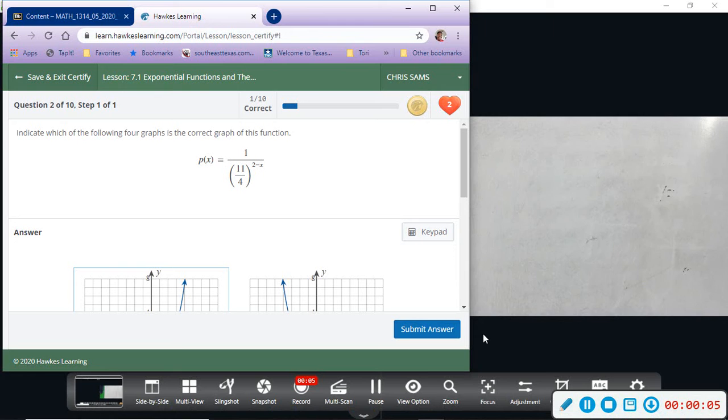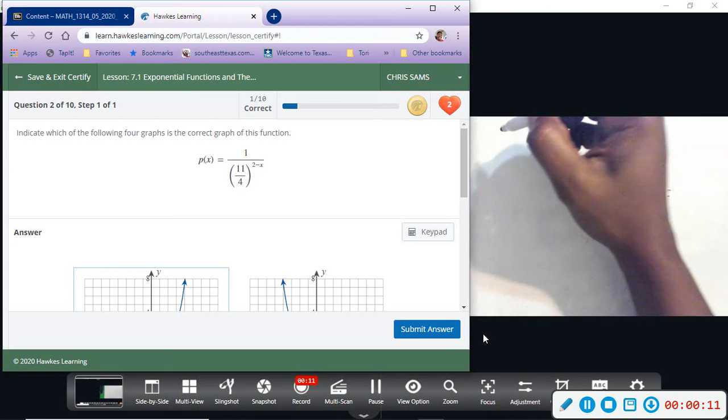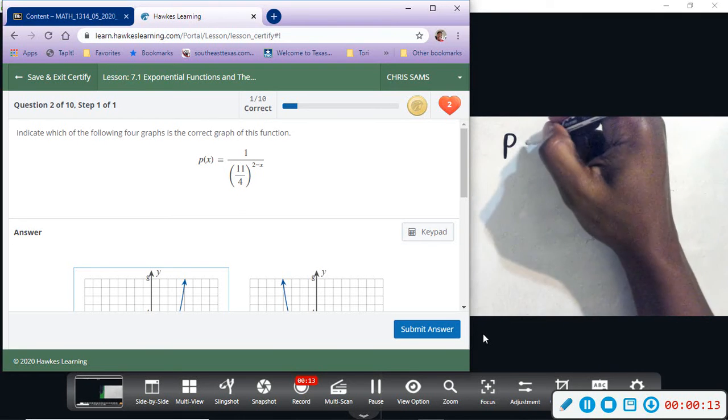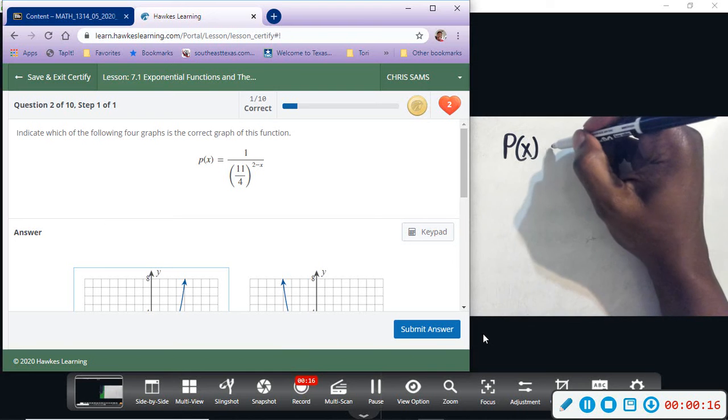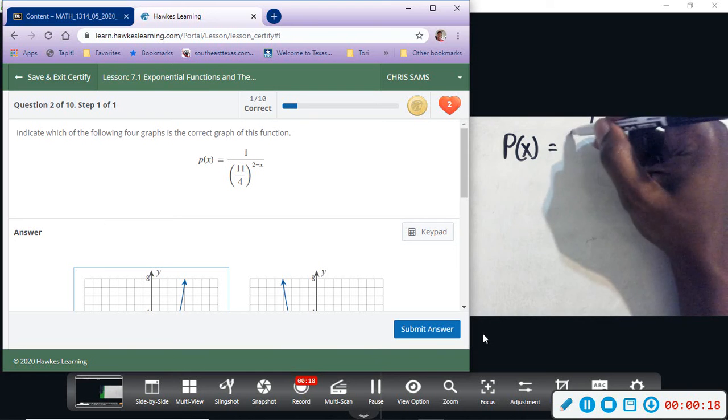All right, example number two. This one looks a little different, but we're going to do a little bit of algebra and get it to look like the standard form that we've seen before. So we have one over this eleven divided by four, and then this is my exponent: two minus x.